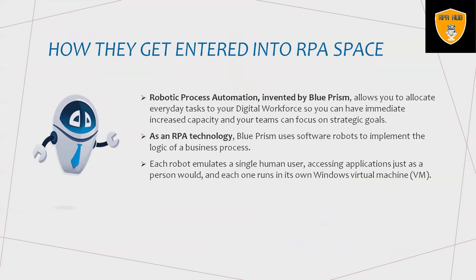Blue Prism was invented in 2001 and allocates everyday tasks to a digital workforce. Because of AI and ML capabilities, this tool has made life easier with great accuracy, saving time and cost. As an RPA technology, Blue Prism uses software robots to implement the logic of business processes. Each robot emulates a single human user accessing applications just as a person would, and each one runs in its own Windows virtual machine.